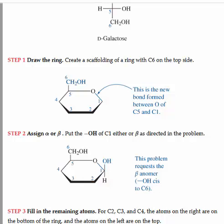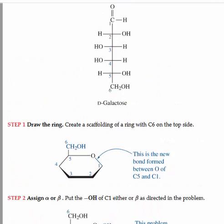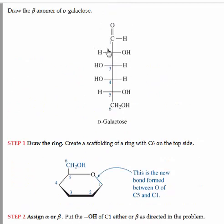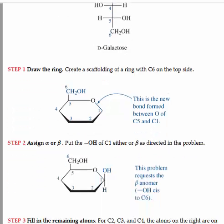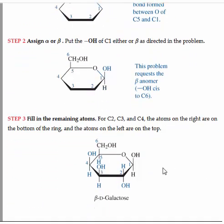For C2, 3, and 4, we look at the Fischer projection, and whatever is on the left-hand side is what goes above the plane. For C2, I have a hydrogen to the left. So for C2, hydrogen goes above the plane, and the hydroxyl goes below the plane.